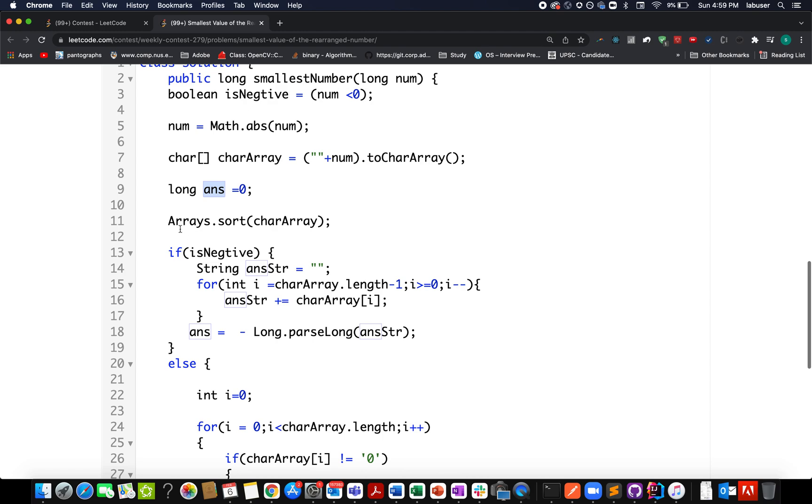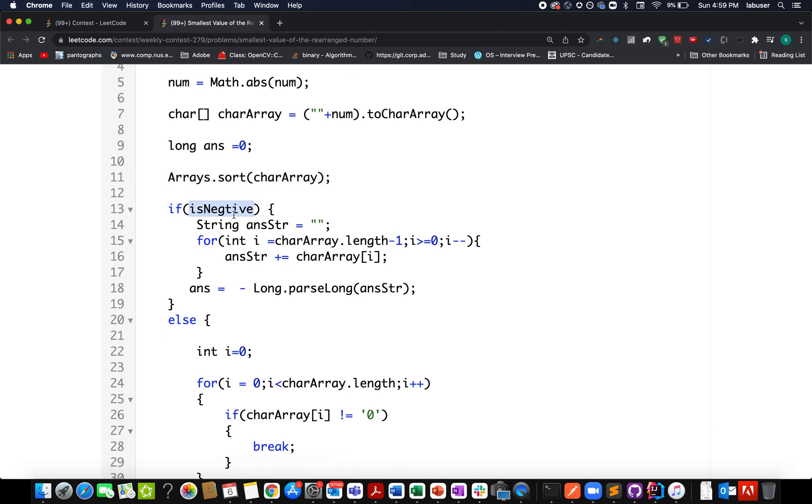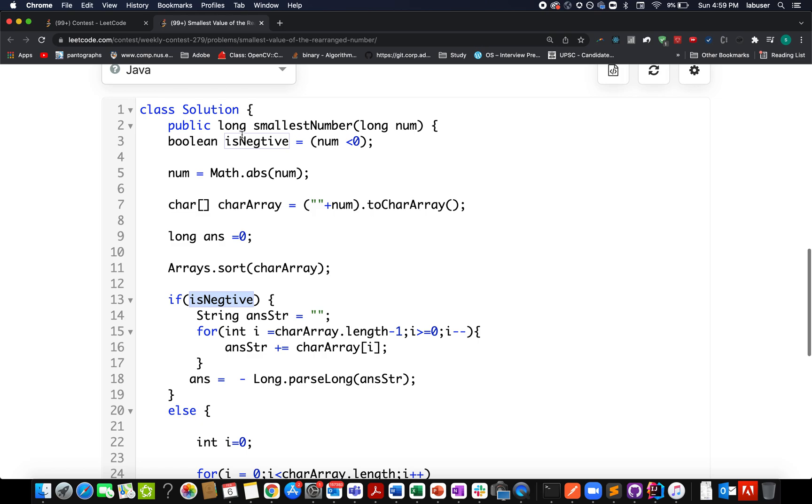Going forward I sort this character array. If the number happens to be negative, what do we need to do? I need to create my answer string and that is simple reversal of this char array. I create the new string, I pass it into long and store it in the answer. Also don't forget the negative sign and this is taken care by this boolean variable because we have previously stored this information whether the number was negative or not.